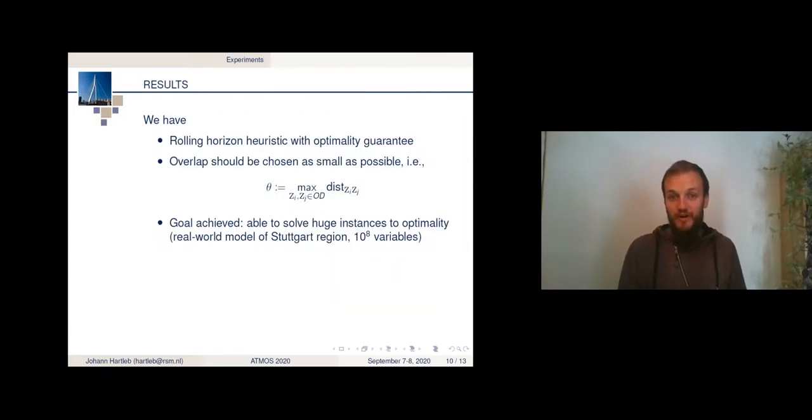Okay, let me quickly wrap up what we had so far. We have the rolling horizon heuristic to solve the vehicle scheduling problem, and we provided an optimality guarantee there. We also know that the overlap should be chosen as small as possible. It's given by the theorem basically. So we don't have any gains by having a longer overlap, but more computational effort. And with this, we can actually solve huge instances to optimality. One of the ones we dealt with was a real-world property mine model for the Stuttgart region, and it went in total in the range of 10 to the power of 8 variables. And with this one, it was possible to solve it to optimality.